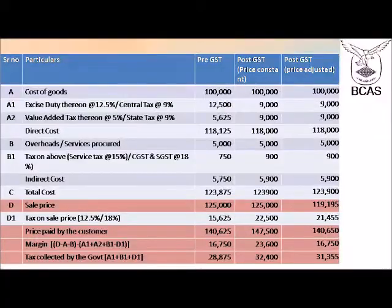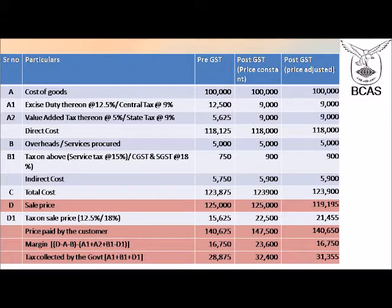In the post-GST scenario, the excise duty of 12.5% is replaced by 9% CGST and the VAT of 5% is replaced by 9% SGST. Therefore, on the purchase of 1 lakh rupees the supplier pays a total of 18,000 rupees as CGST and SGST, making the cost in his hands 1,18,000 as against 1,18,125 pre-GST. On procurement of services of 5,000 rupees, another 18% CGST and SGST will apply, making the cost 5,000 plus 900, totalling 5,900. The total cost of procurement will come to 1,18,000 plus 5,900, equal to 1,23,900.